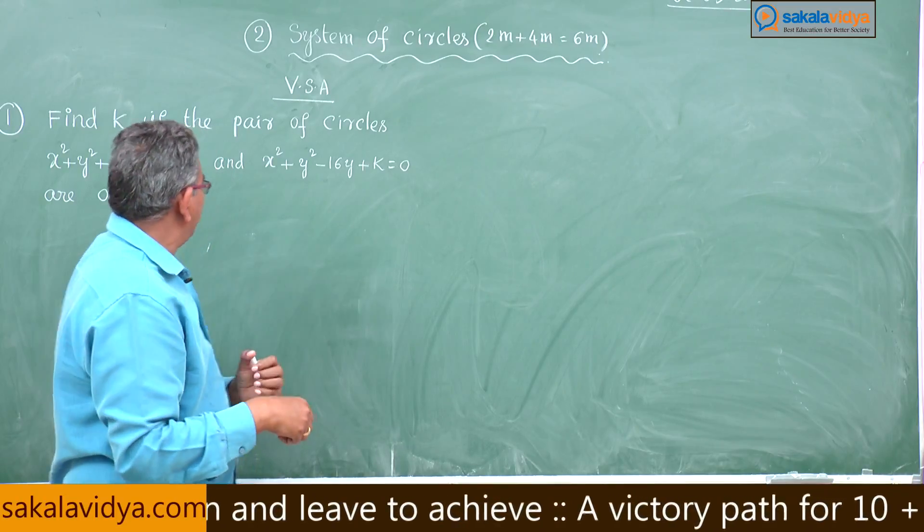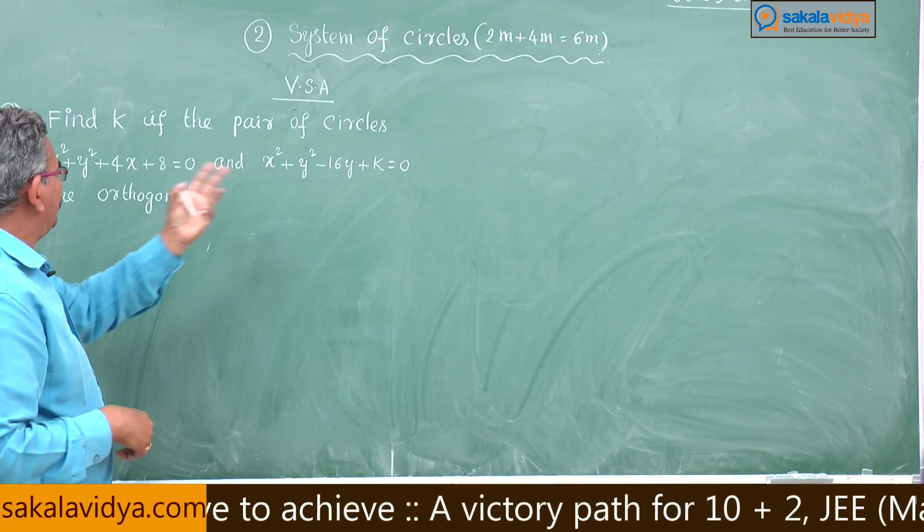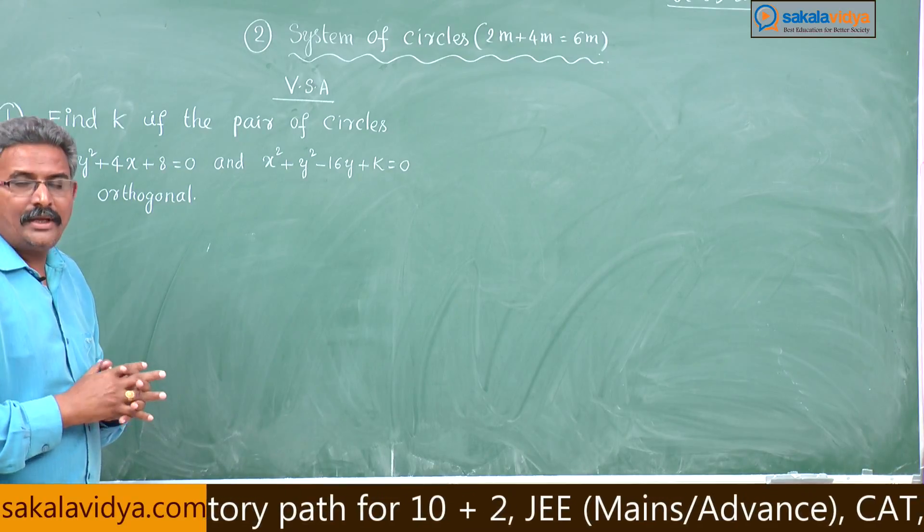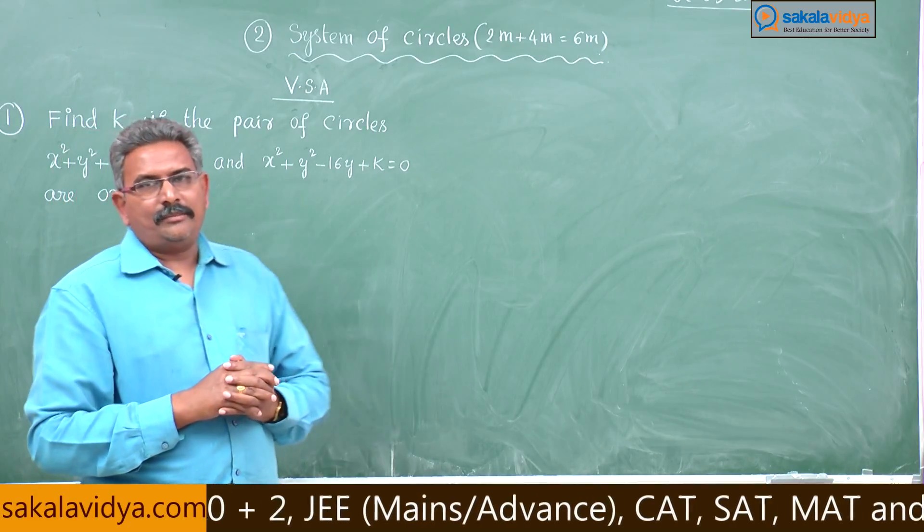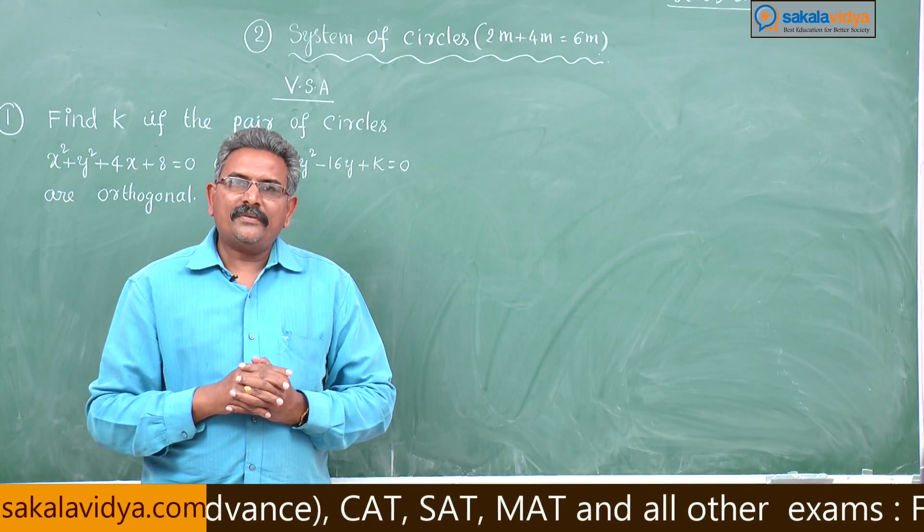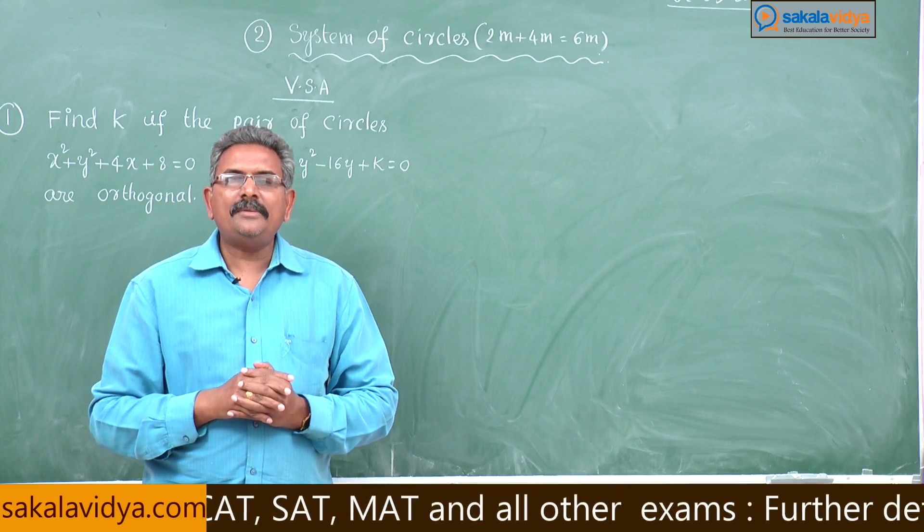That means if the two circles cut each other orthogonally, if they are orthogonal, we have the condition. What is the condition? 2gg' + 2ff' = c + c'.